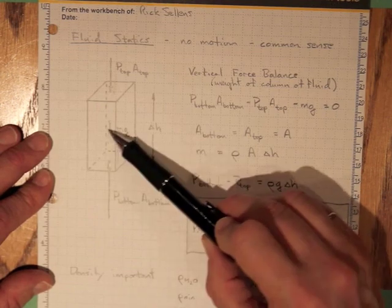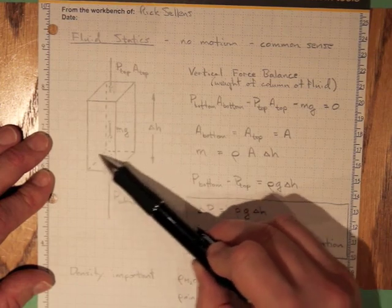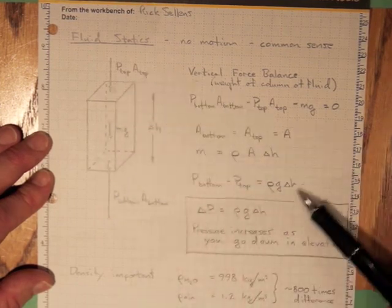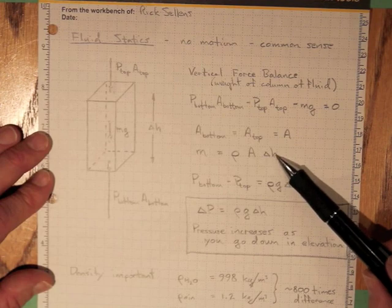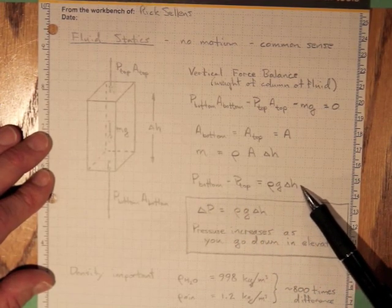And the mass, well that'll be the density times the volume and that'll be A, the cross-sectional area of the bottom or the top, times delta H. So P bottom minus P top must be equal to rho G delta H.